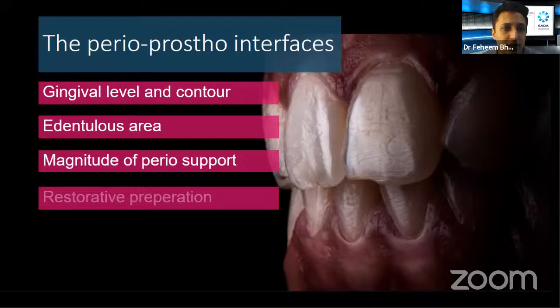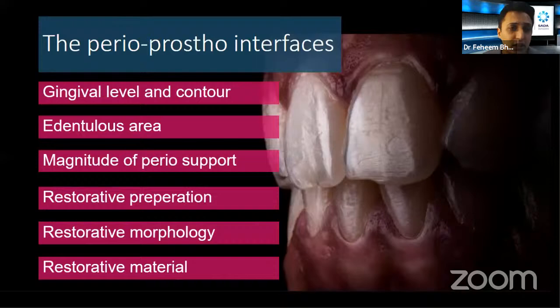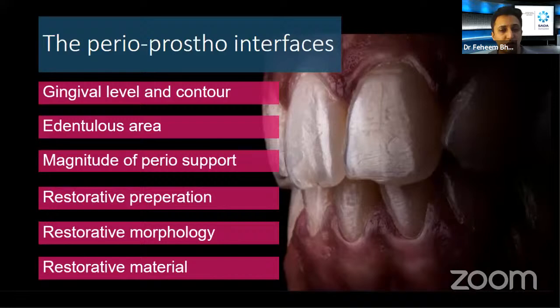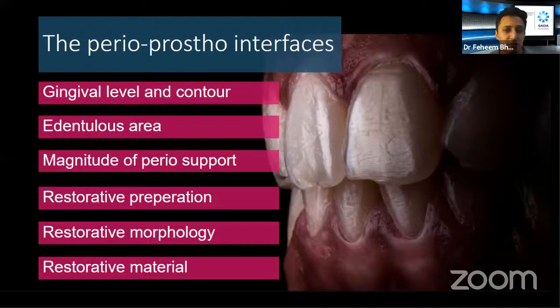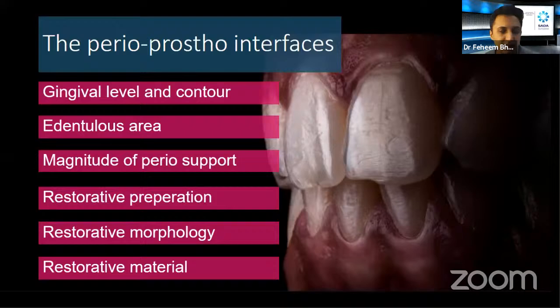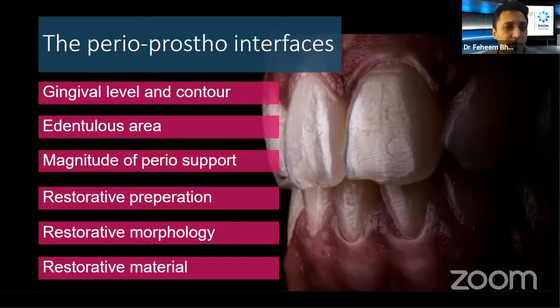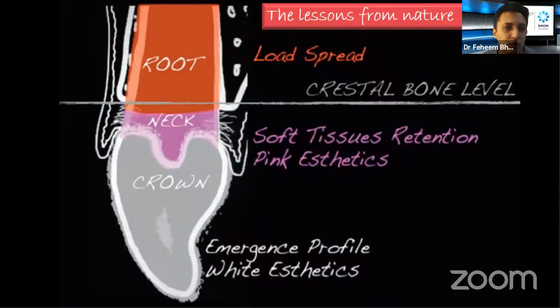There are various perio-prosthetic interfaces we come across, including the gingival level and contour, areas of edentulism, the magnitude of periodontal support — meaning crown-root ratio and previous periodontal status — the restorative preparation, particularly restorative margins for crowns, veneers, or bonded restorations, and the morphology and material characteristics of those restorations. Many of these aspects are prosthodontic-related; we'll focus on the periodontal aspects, mainly toward the supracrestal connective tissue attachment, and then go ahead with a case presentation to link it all together.